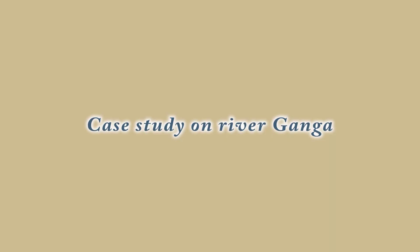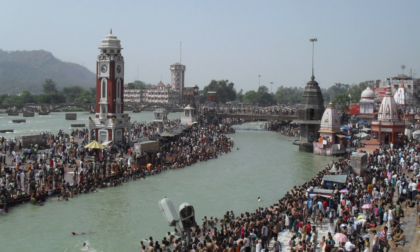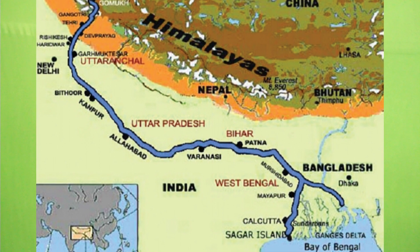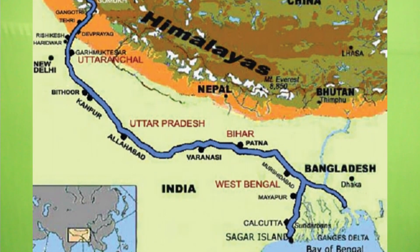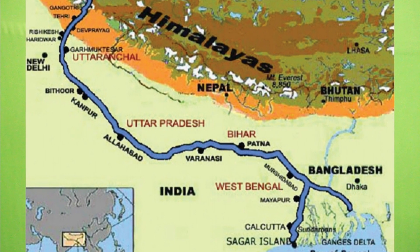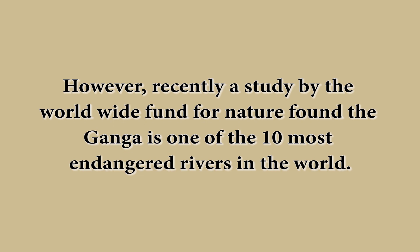Now let us do a case study on river Ganga. Ganga is one of the most famous rivers of India. It sustains most of the northern, central and eastern Indian population. Millions of people depend on it for their daily needs and livelihood. However, recently a study by the World Wide Fund for Nature found that Ganga is one of the ten most endangered rivers in the world.